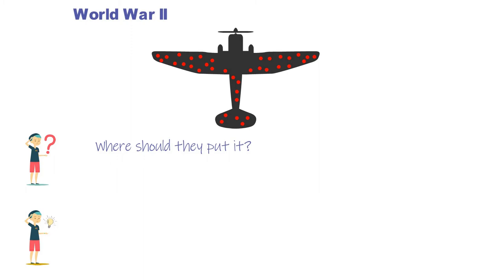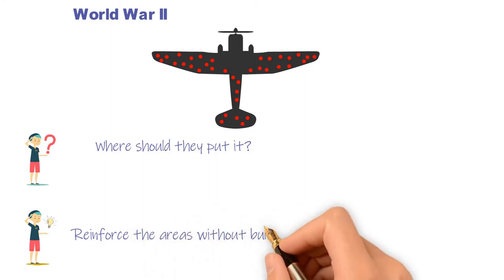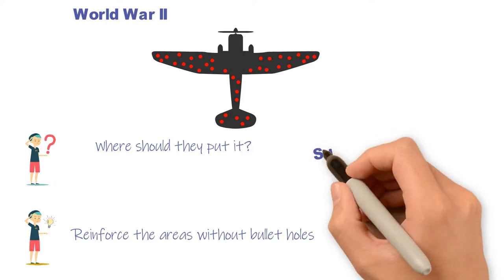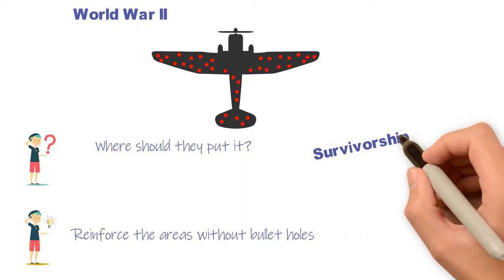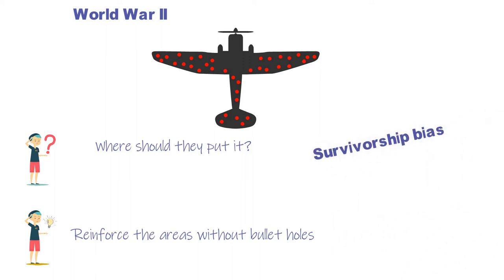Because the military was only looking at the damage on returned planes. They overlooked damage on planes that didn't return. The bullet holes they were looking at actually indicate the areas a plane could be hit and keep flying. This is one of the most popular examples of survivorship bias. Keep the survivorship bias in mind and please rethink the story of billionaires dropping out of college.